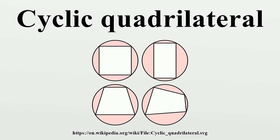Characterizations: a convex quadrilateral is cyclic if and only if the four perpendicular bisectors to the sides are concurrent. This common point is the circumcenter. A convex quadrilateral ABCD is cyclic if and only if its opposite angles are supplementary. That direct theorem was Proposition 22 in Book 3 of Euclid's Elements.